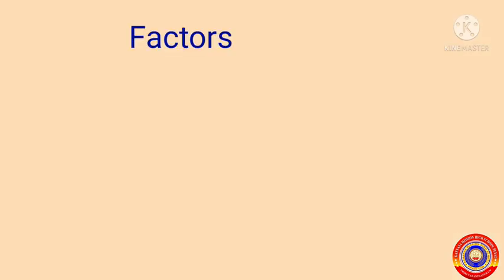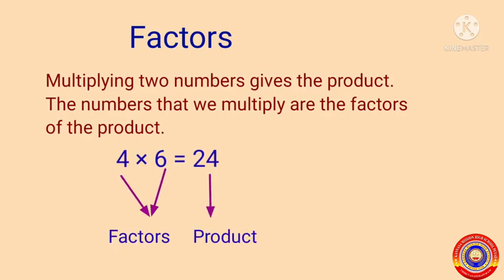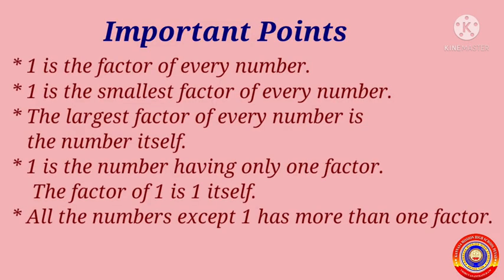What do you mean by factors? Multiplying two numbers gives the product, and the numbers that we multiply are the factors of the product. For example, 4 multiplied by 6 is equal to 24; here 4 and 6 are called the factors of the product 24. Some important points to remember: 1 is the factor of every number and also the smallest factor of every number. The largest factor of every number is the number itself. 1 is the number having only one factor, and the factor of 1 is 1 itself. All numbers except 1 have more than one factor.